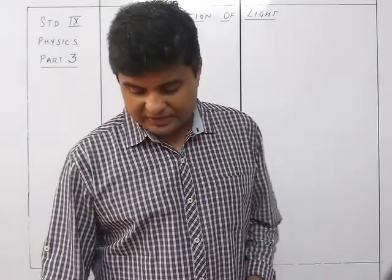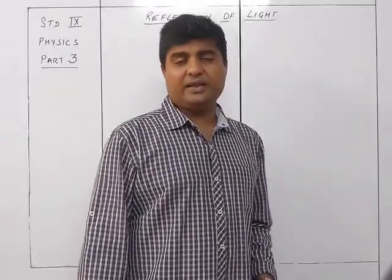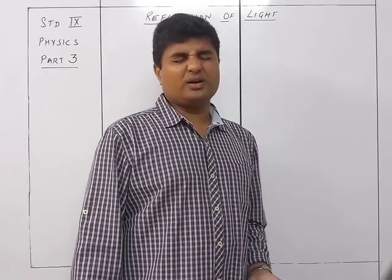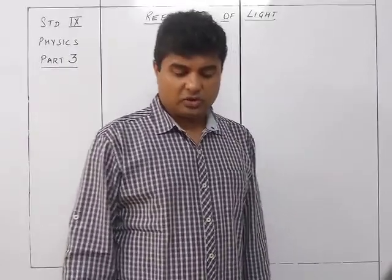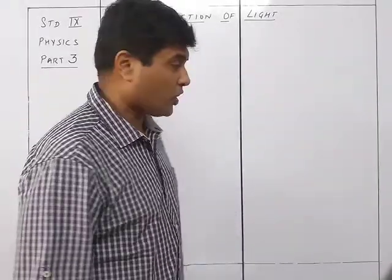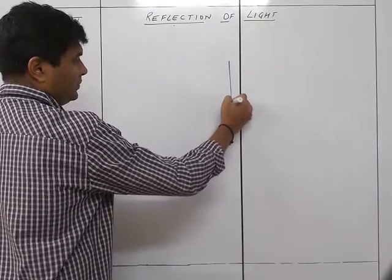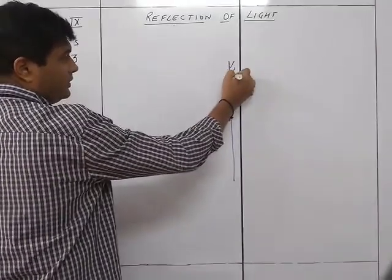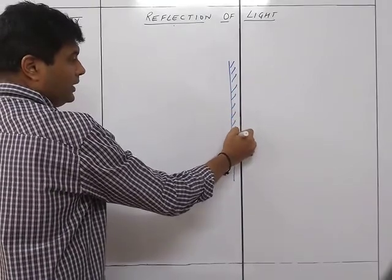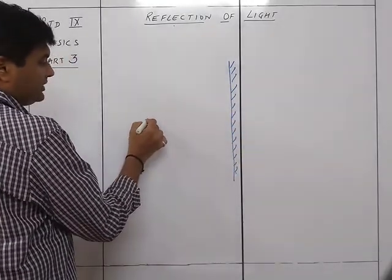We can also draw a ray diagram for lateral inversion — this is your homework. Diagram 7.10 of lateral inversion also needs to be drawn. The drawing is simple: we draw the mirror line, and instead of just a point as the object, we take it as a letter P.